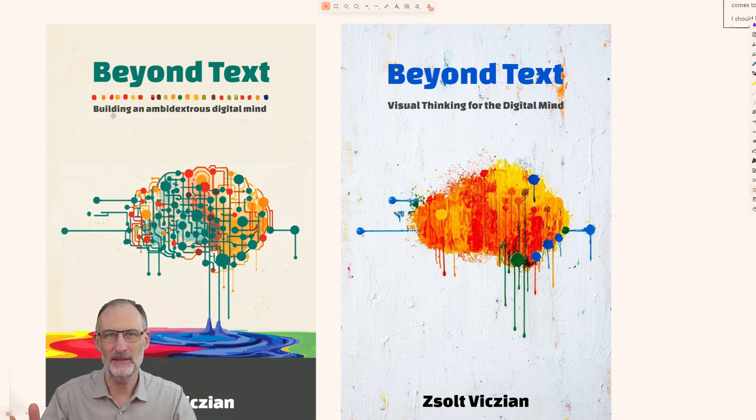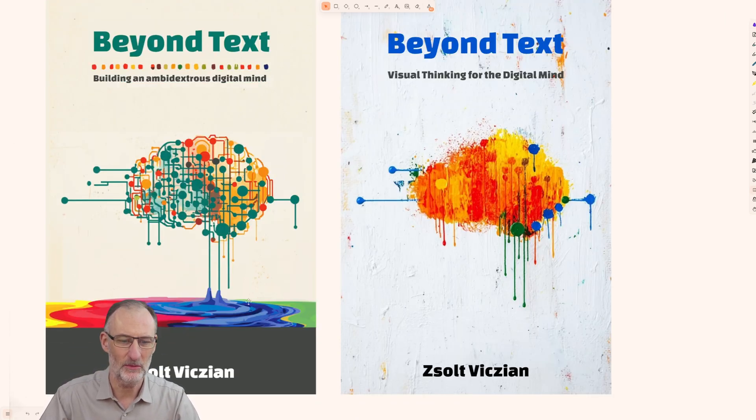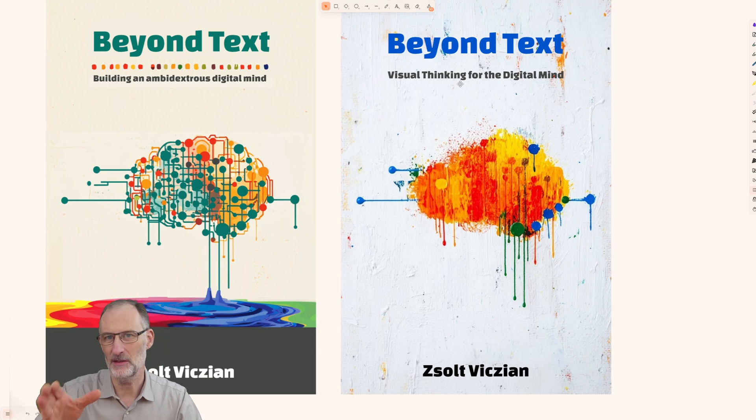I was playing with this idea of building an ambidextrous digital mind, which sounds a bit more fancy, but actually this is what the book is about. But then you don't understand why the colors and why the paint. So that's why I think it's going to be visual thinking for the digital mind. Also, this is what got the most votes from you. But again, please look at the survey. Let me know what you think about the cover designs. These designs are not there, but there are designs that are similar. So I'm interested in which one you like. So thanks again for your time, and I hope to see you in the next update.